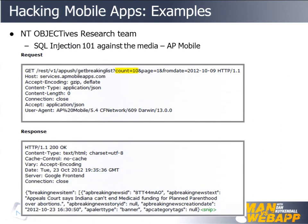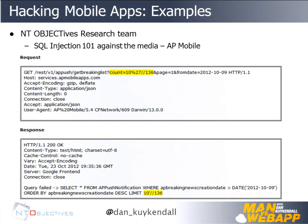I was looking at some news apps — this one is the Associated Press mobile app. I started playing with it and saw 'count equals 10' sending a JSON response back. With a simple SQL injection payload, I'm getting SQL error statements back. There's a lot of this out there — people are building mobile apps very quickly, building web services to power them with very little validation.